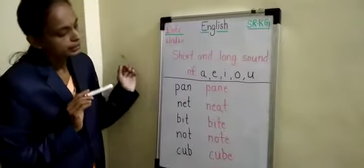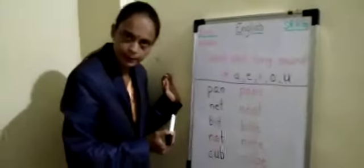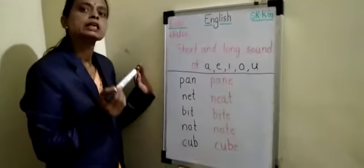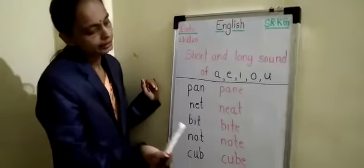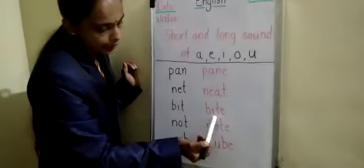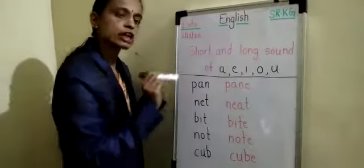Okay, bacham. Now, next word. B, I, T, BIT. BIT is a short sound of I. Okay, then B, I, T, E, BITE. BITE is a long sound of I.